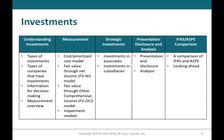Chapter outline: Investments — Understanding investments, types of investments, types of companies that have investments, information for decision making, measurement overview, cost/amortized cost model, fair value through net income model, fair value through other comprehensive income model, impairment models, strategic investments, investments in associates, investments in subsidiaries, presentation, disclosure and analysis, and IFRS/ASPE comparison.